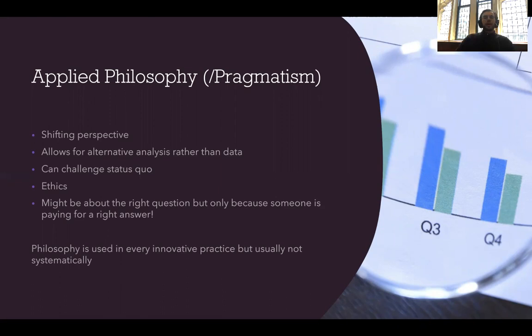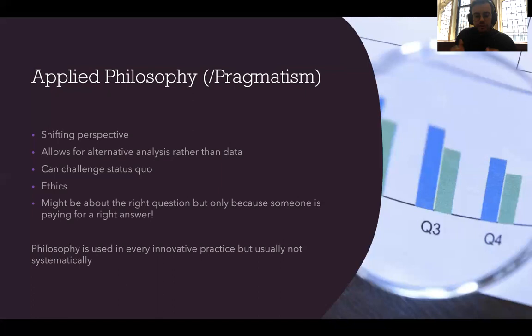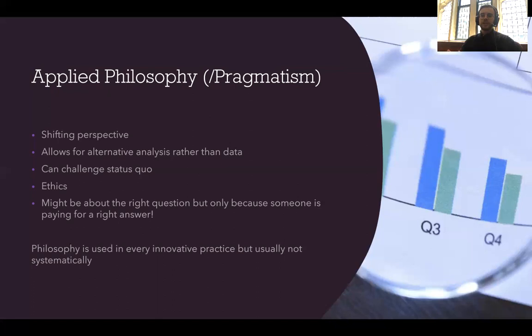So how is pragmatism or applied philosophy used? Well, if a philosopher tells you that philosophy is about asking the right questions, it is true — philosophy is a lot about asking questions to shift the perspective. Even in corporate environments — HR, product development, the video game industry — people don't use academic philosophy explicitly, but they do it subconsciously by asking themselves questions in order to shift perspectives. There's a guy named Rory Sutherland who is a perfect example of how philosophical thought and pragmatism can help you shift your perspective.